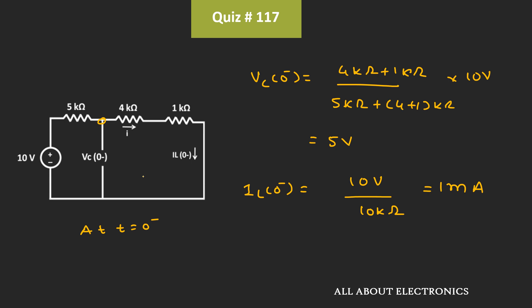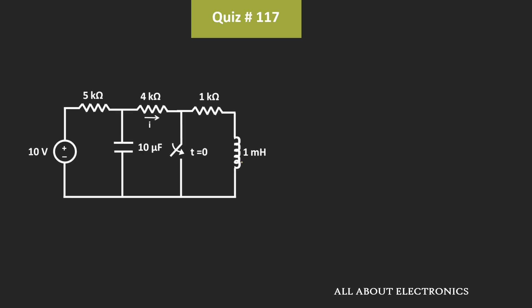We know that the capacitor opposes the instantaneous change in the voltage, while the inductor opposes the instantaneous change in the current. That means Vc(0-) is equal to Vc(0+), and similarly Il(0-) will be equal to Il(0+). That means even if this switch is closed at time t is equal to zero, the voltage across the capacitor and the current through the inductor will remain the same.